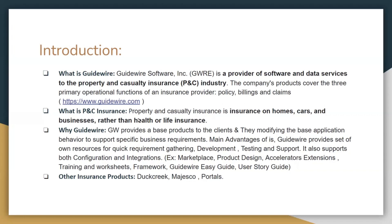What is property and casualty insurance? P&C insurance deals with homes, properties, cars, vehicles, and sometimes business operations and workers' compensation. All these lines of business are part of P&C insurance, rather than health and life insurance.